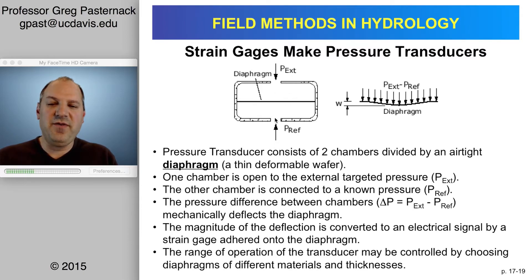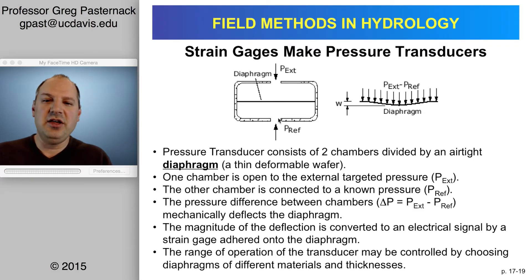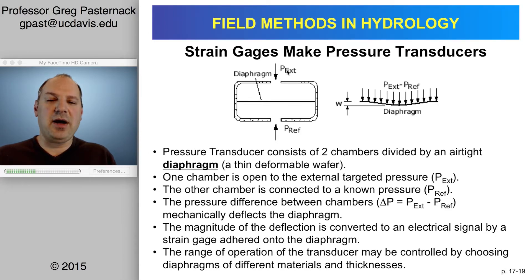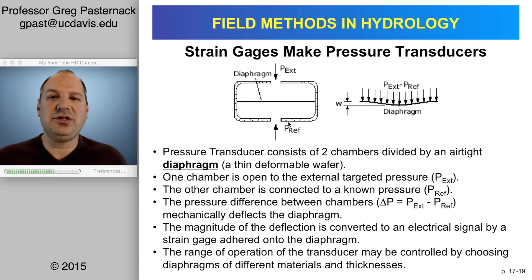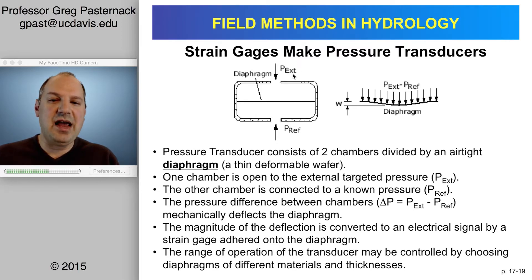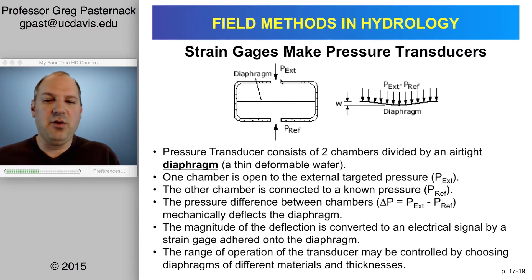If you put a vent all the way through the pressure transducer to equilibrate with atmospheric pressure, then you're only sensing the hydrostatic pressure. If it's sealed, you have some arbitrary reference pressure or vacuum inside, in which case you have to be mindful that you're measuring both the atmospheric pressure and the water pressure.